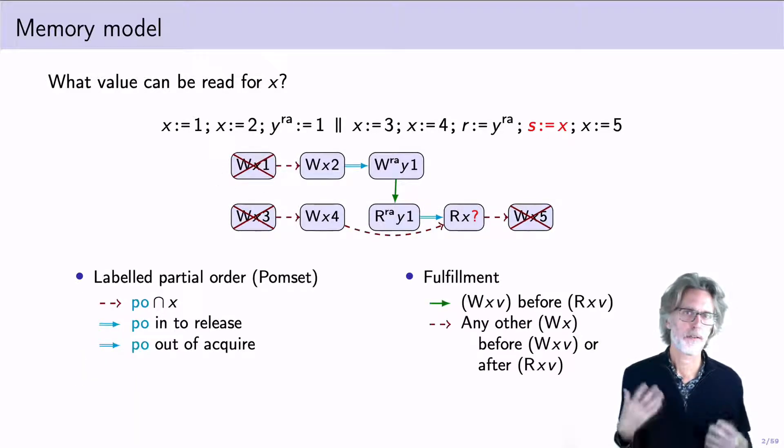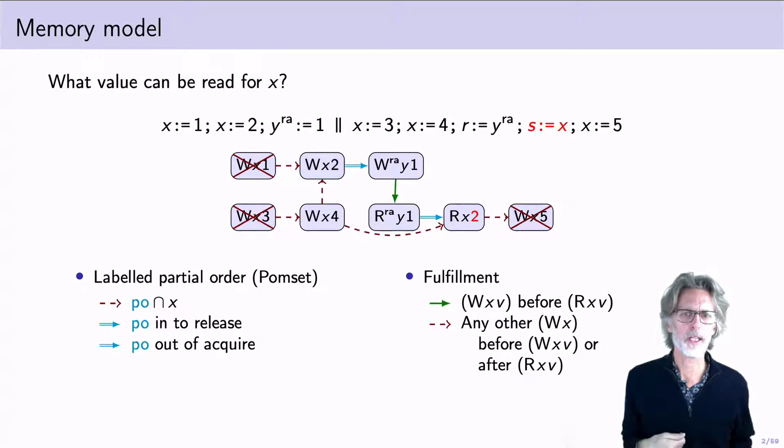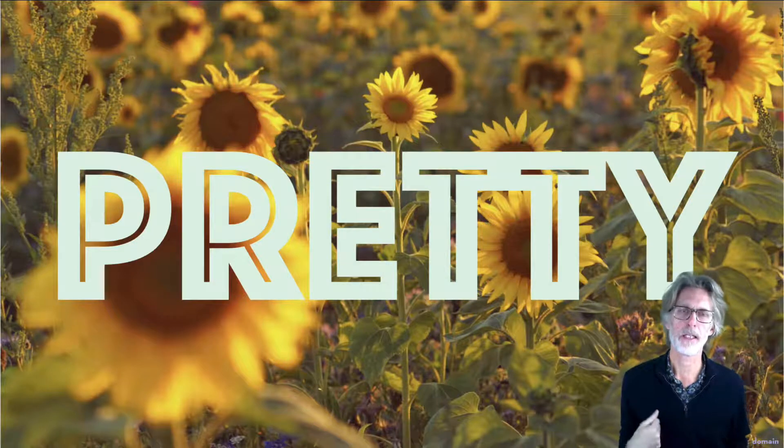Labeled partial orders provide a very natural model for this kind of execution, where the events are marked with their action and order represents causality. And we have some notion of fulfillment, which is that in order for a write to fulfill a read, it must precede it and there must be some order with every other write. And you can see here that this very simple requirement gives me what I want here. For example, if I order these writes with 4 before 2, I can see 2 in this thread. Of course, I could order them the other way around and see the 4. But if I try to see 1, I'll end up with a cycle one way or the other. Thus, the acyclicity in a partial order provides a really pretty way to think about causality in a relaxed memory system.